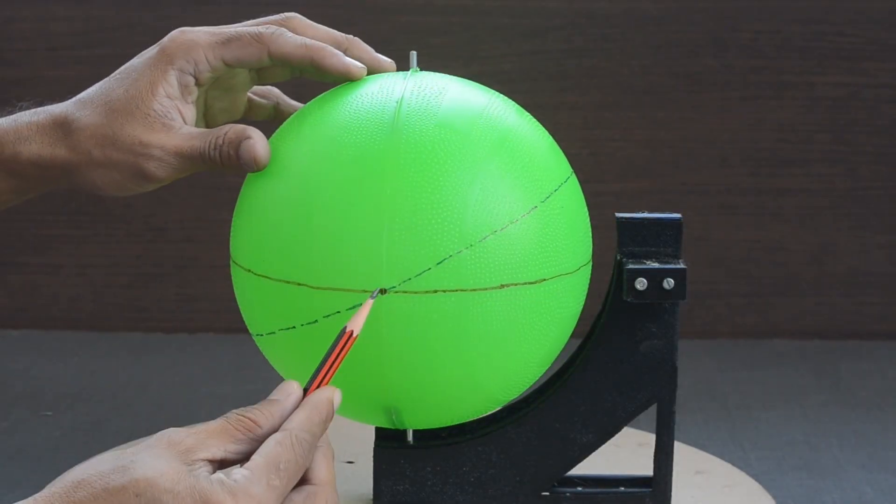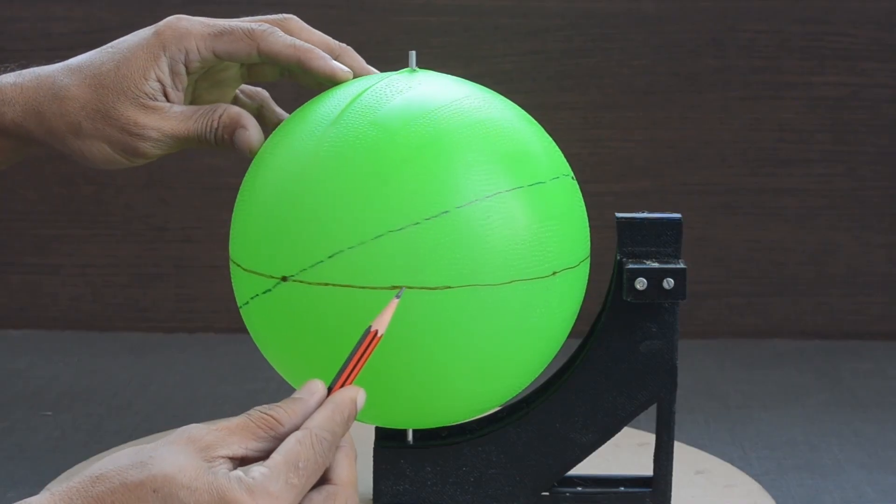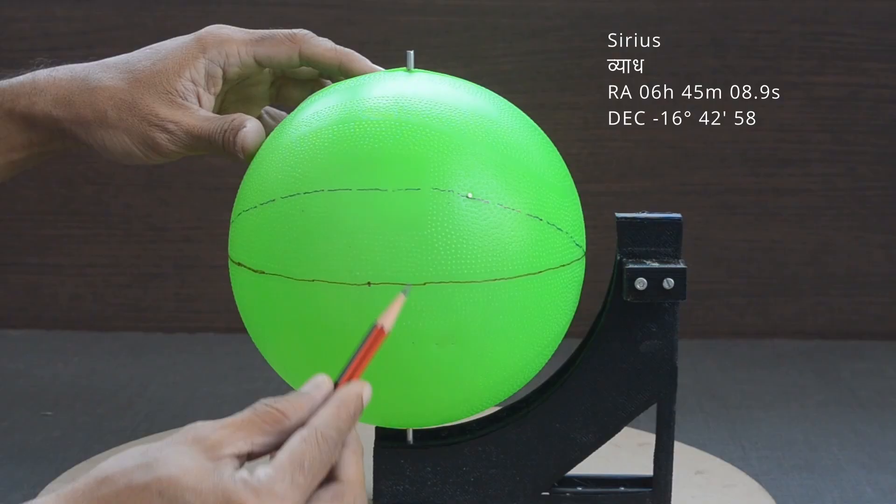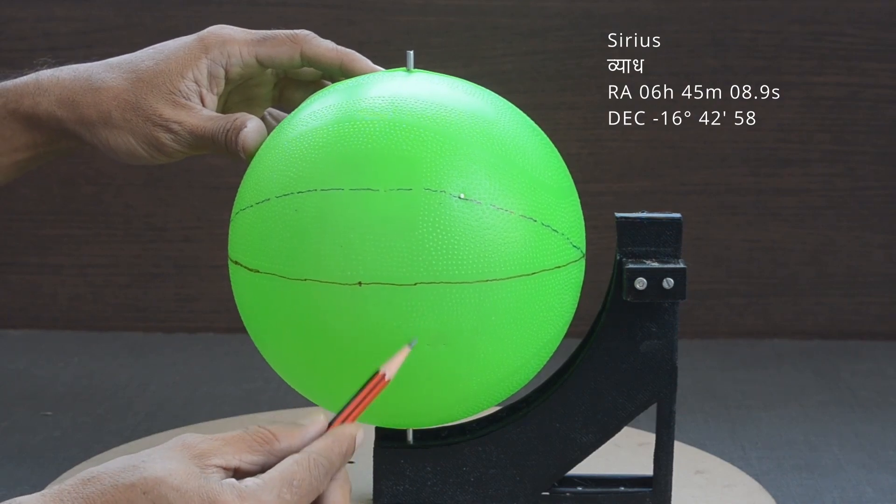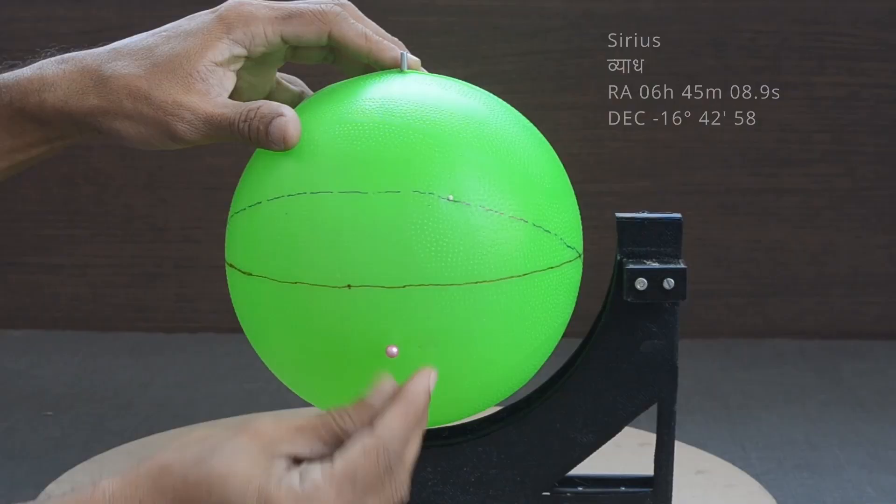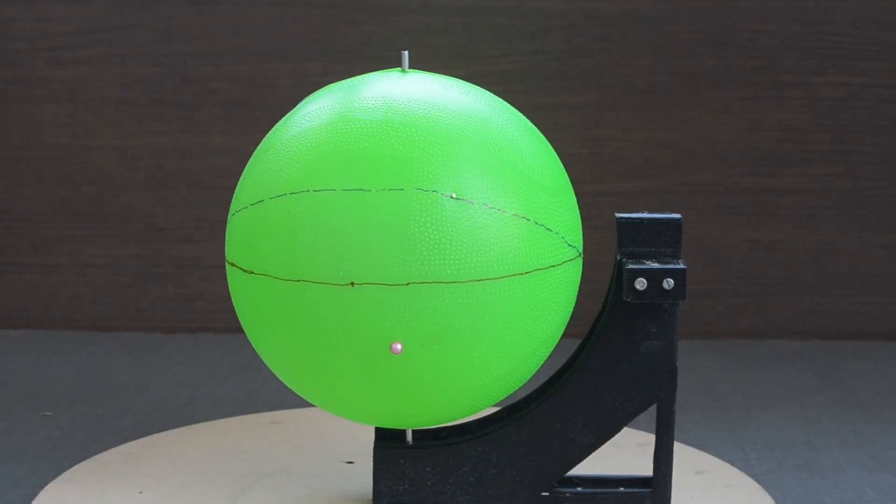Sirius, brightest star in the night sky, has a right ascension of 6 hours and 45 minutes. That is 15 times 6, 90 degrees and add another 12 degrees approximately from the vernal equinox point. Its declination is minus 16 degrees and 42 minutes. It should be located somewhere here in the southern part. This small pink bead will represent Sirius, brightest star in the night sky.